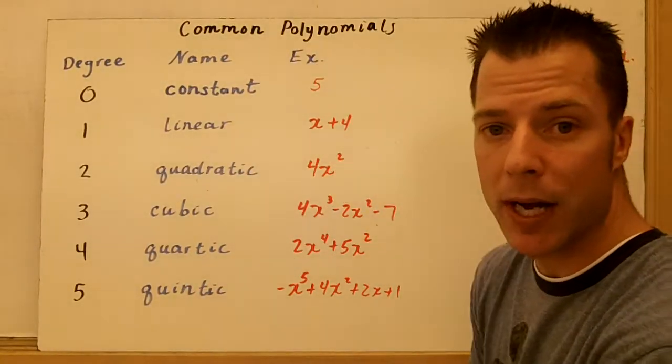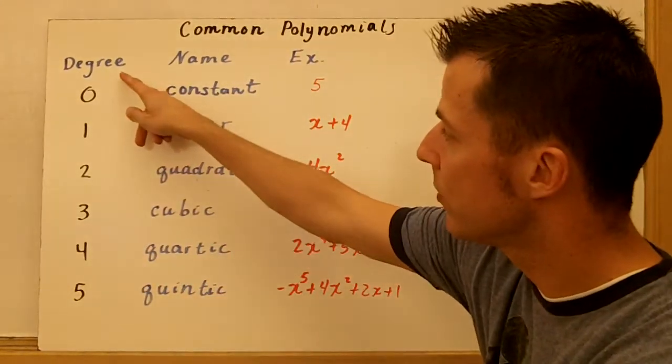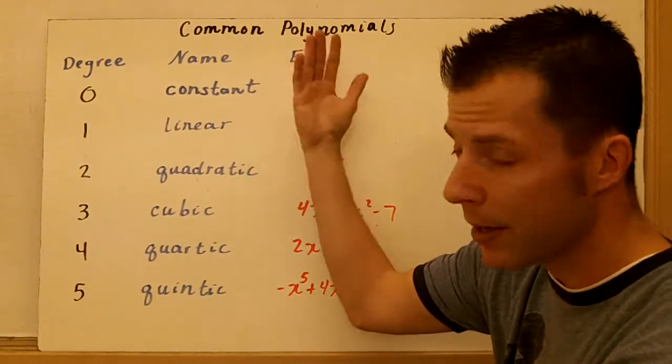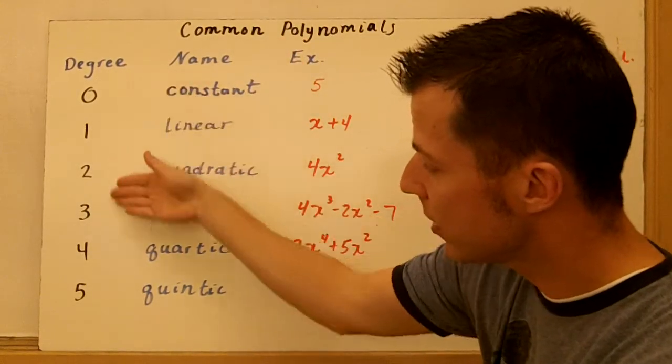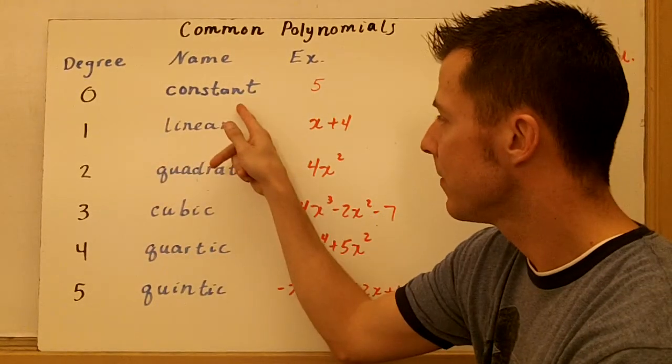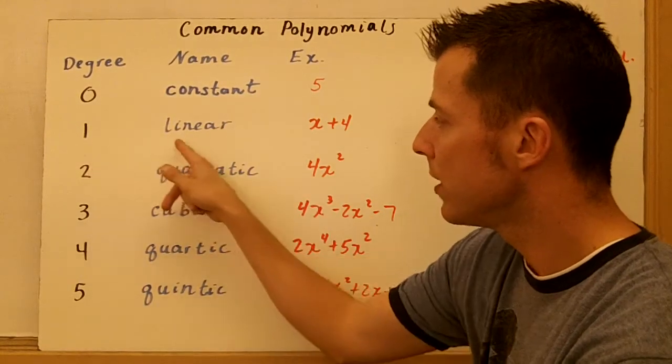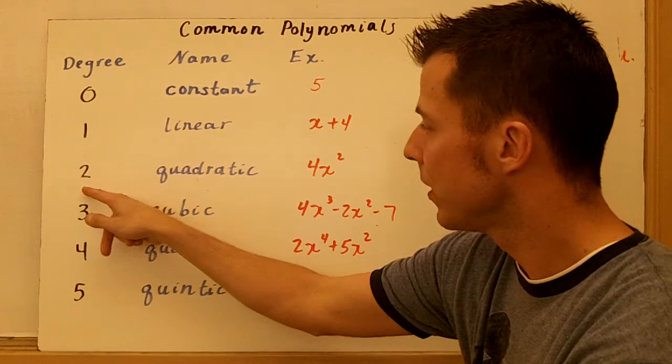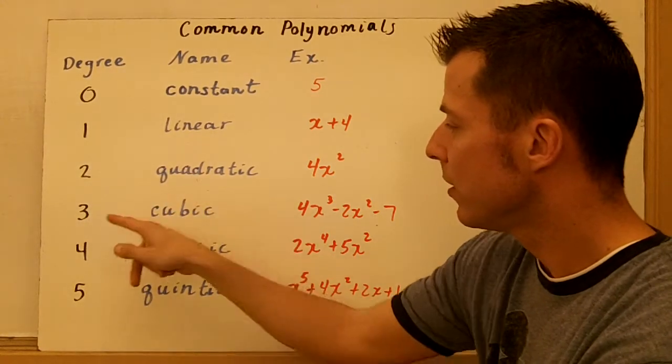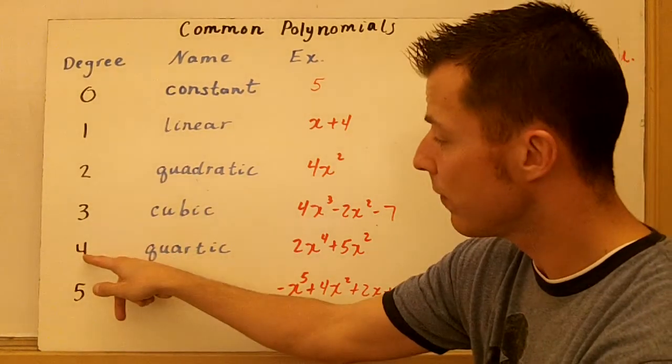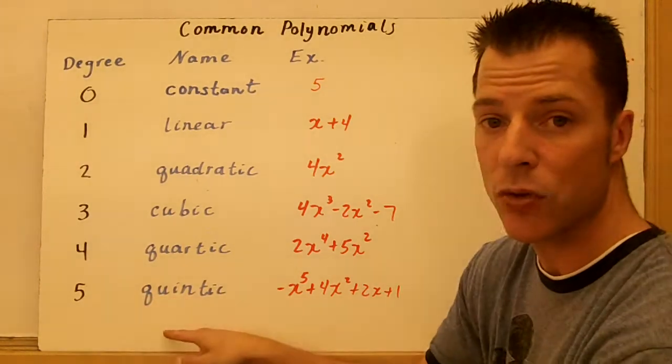Some common polynomials. I listed from degree, the name, and an example. Common polynomials from degree 0 to 5. Degree 0 is a constant. Degree 1 is linear. Degree 2 is quadratic. Degree 3 is cubic. Degree 4 is quartic. And degree 5 is quintic.